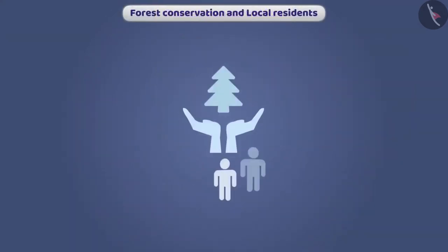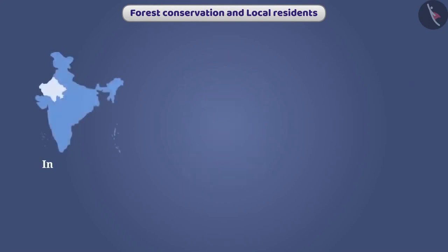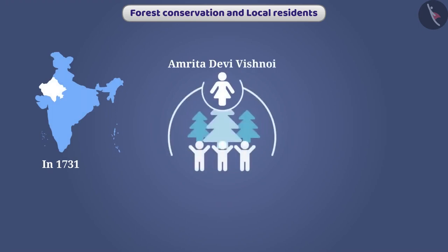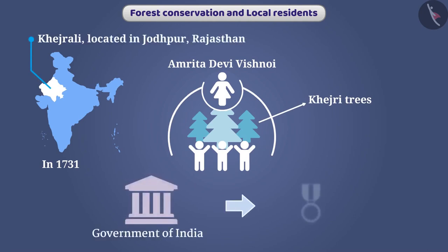Local residents are trying to conserve forests as per their tradition. In 1731, Amrita Devi Bishnoi, along with 363 people from her village, sacrificed themselves to save Khejri trees in the village of Khejrali, located in Jodhpur, Rajasthan. The Government of India has instituted the Amrita Devi Bishnoi National Award for conservation of animals in her honour.